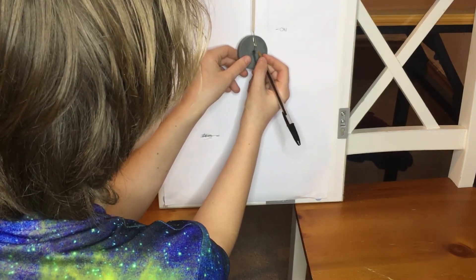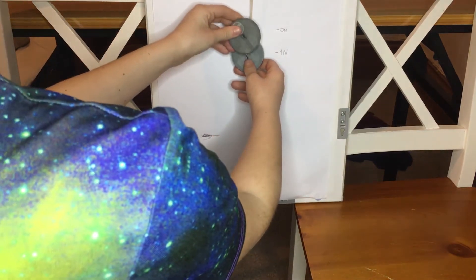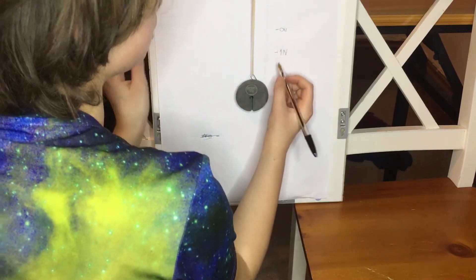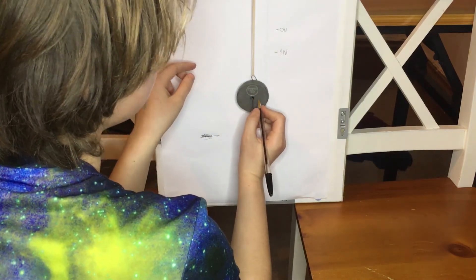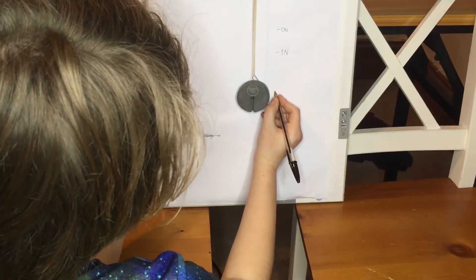That will be one Newton around here. And then we're going to add two Newtons. As you can see, it's not going to be very accurate because it's yet again resisting. So two newtons will be around here. It'll be a bit unequal.